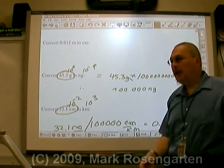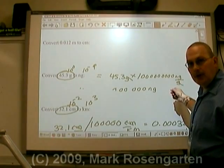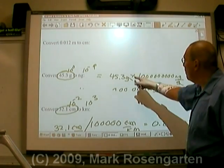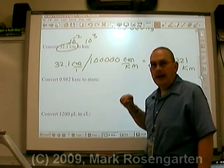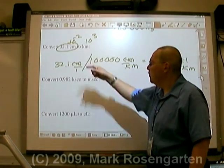So, to sum up, if the unit you're converting is in the denominator of your conversion factor, you multiply. And if the unit you're converting is in the numerator of the conversion factor, you divide.